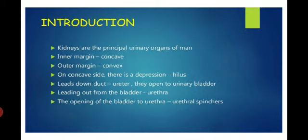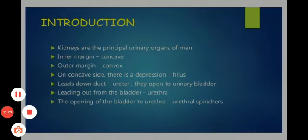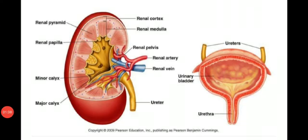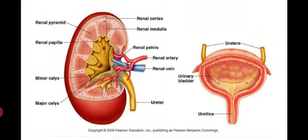These are some additional parts of the human urinary system. Here students, you are watching the longitudinal section of the kidney, which shows it consists of two regions. The outer region is called the renal cortex while the inner region is called the renal medulla. There are many cone-shaped areas in the renal medulla called the renal pyramids.